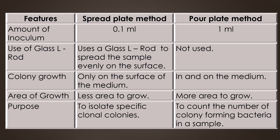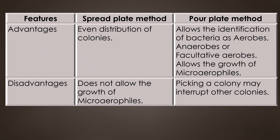The main purpose of the spread plate method is to isolate specific clonal colonies, and the purpose of the pour plate method is to count the number of colony-forming bacteria in a sample.